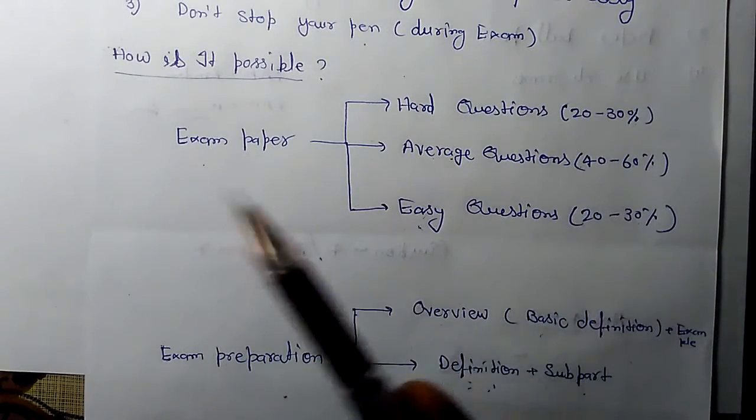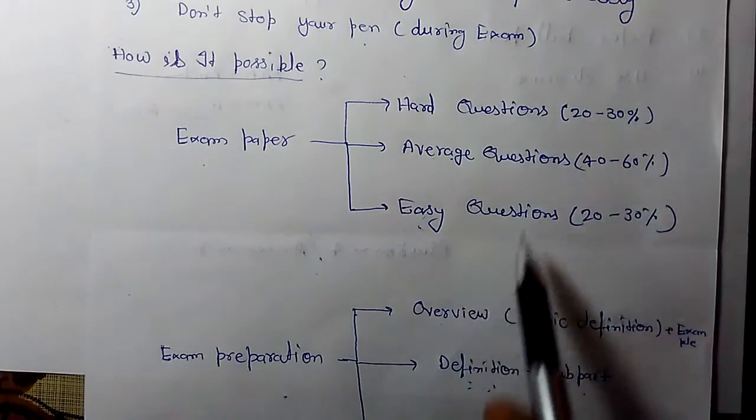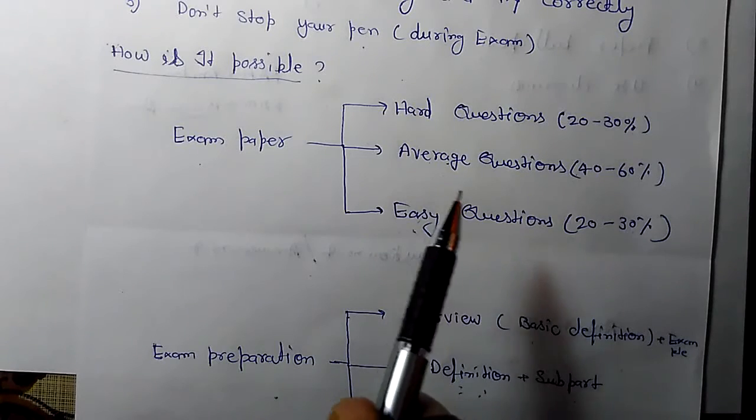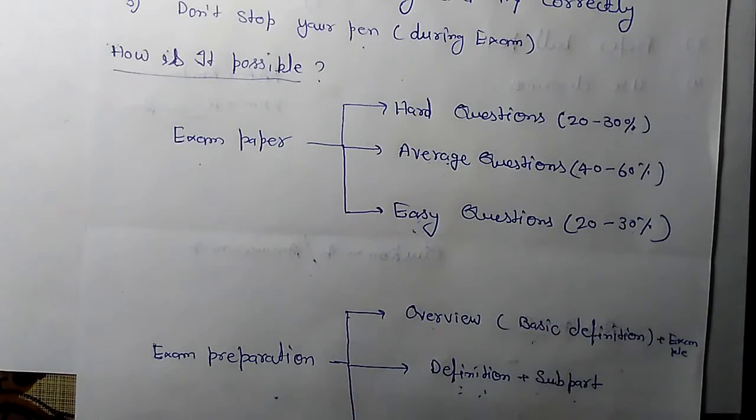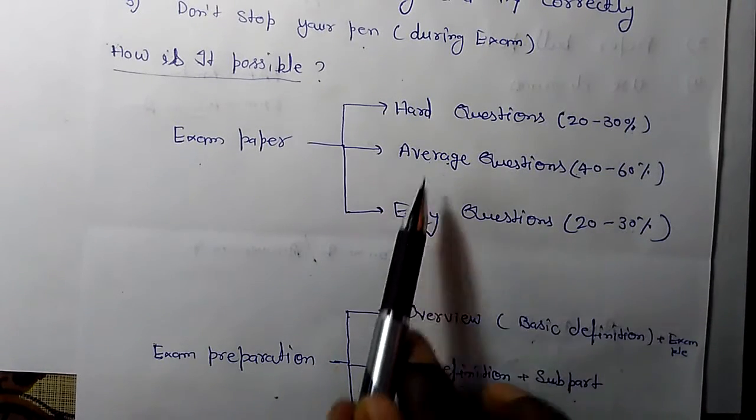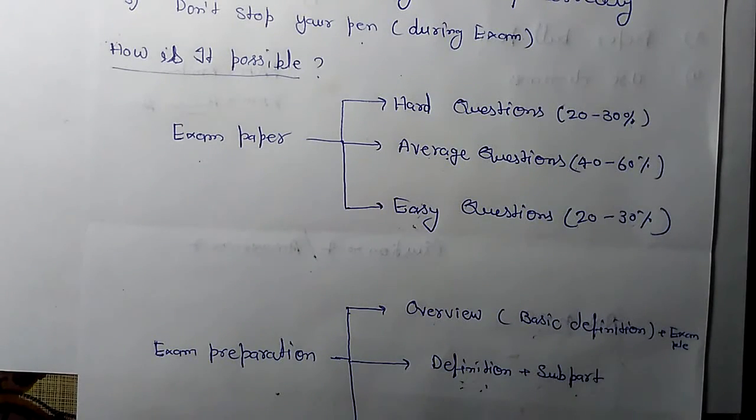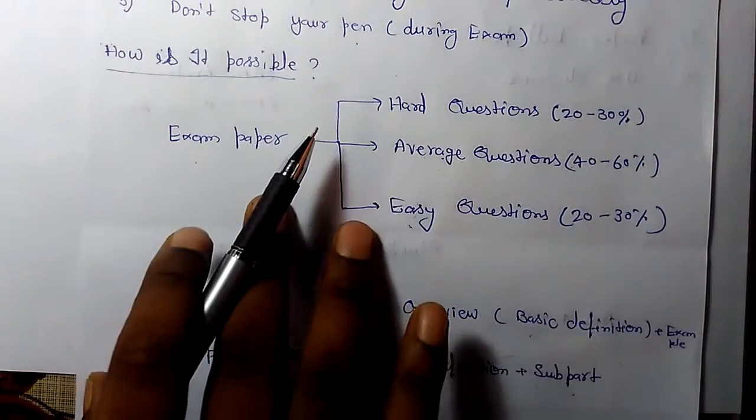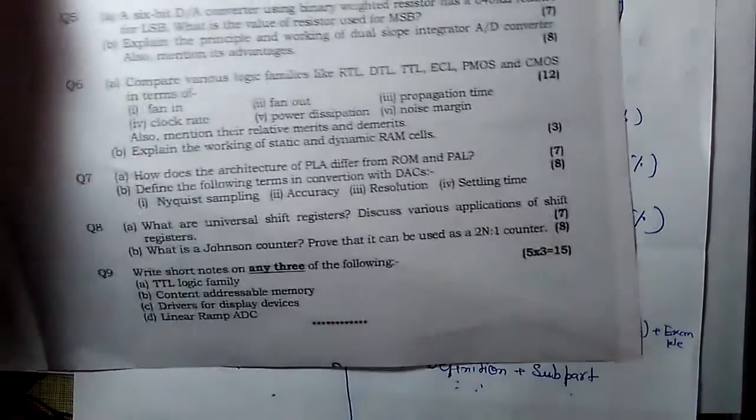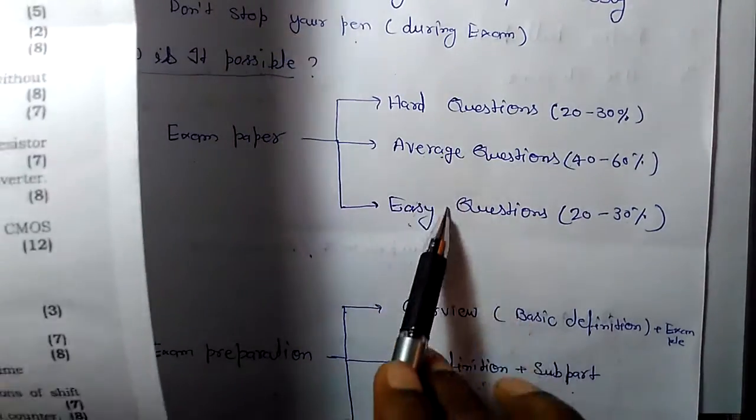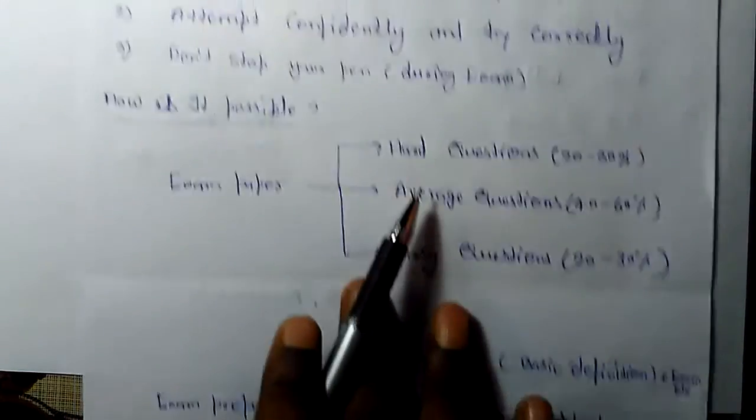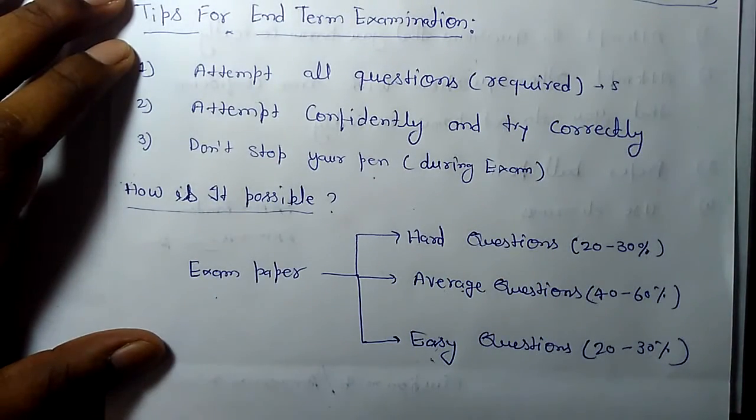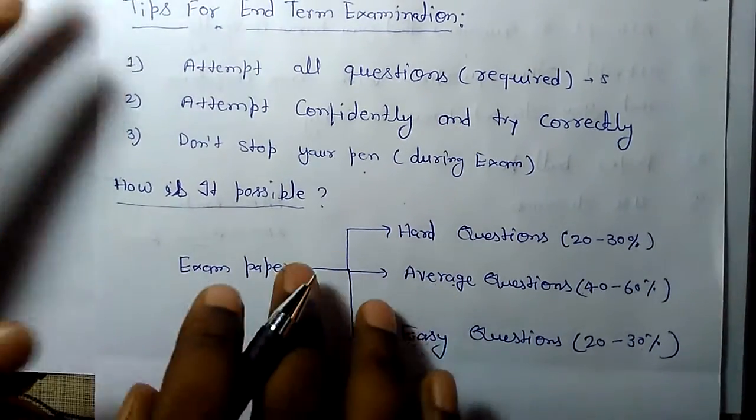If someone is very intelligent, then you can attempt 100% questions correctly. But if you have less time in preparation, then you can easily attempt these two parts. So you need to concentrate on these two parts and attempt all the questions.